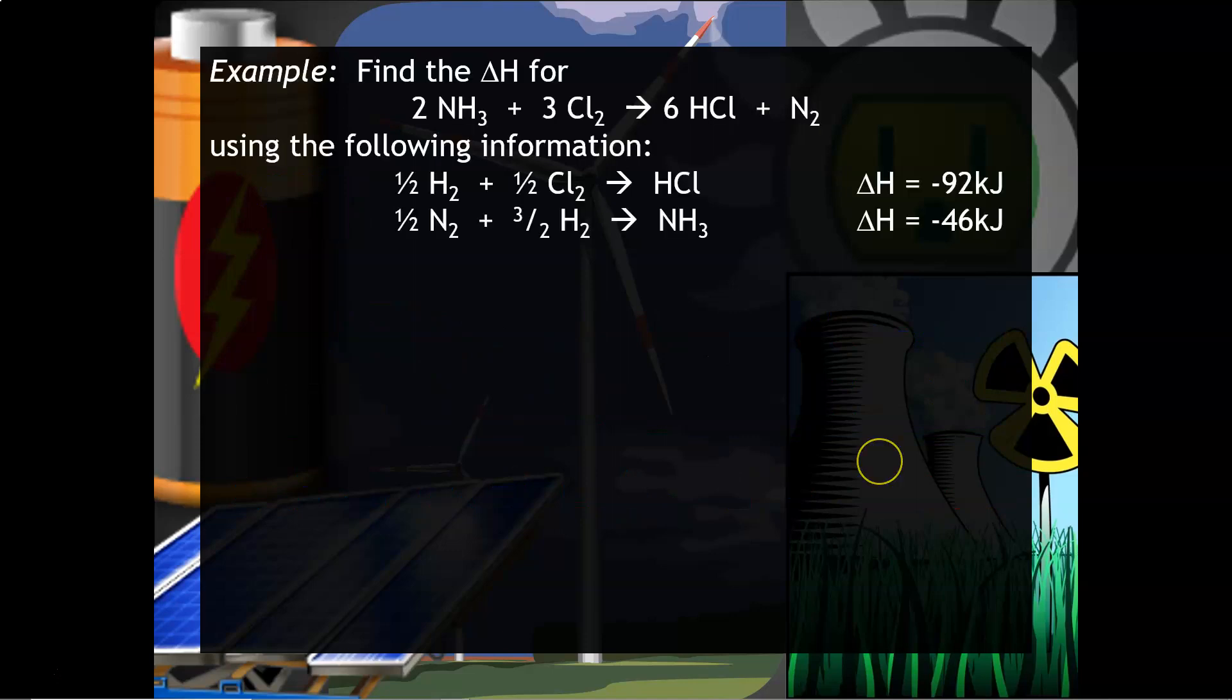Let's try another one. I'm asking you to find the delta H for this overall equation. Sometimes students get really freaked out with fractions, but have no fear. It won't be that bad. So what you want to do again is select a substance that appears in the overall equation, but does not appear in the mini equations. I would say the HCL is probably the best one to choose. I can kind of see that in the overall equation, it's supposed to be six HCL. So what that tells me is that I'm going to have to multiply this reaction by six, but I don't need to do any reversing because it is on the correct side. So I'm going to multiply everything by six. And then I'm also going to multiply the delta H by six as well.